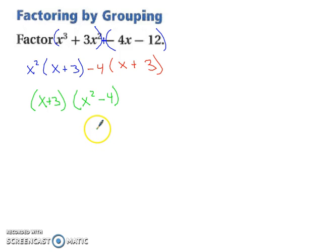However, this is not completely simplified. That's a difference of two squares. Perfect square, perfect square, separated by a subtraction sign. So our final answer is going to look like x plus 3, because that doesn't change. And this can be separated out to x plus 2, x minus 2. Difference of two squares, different signs. And now that is factored.